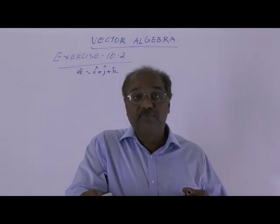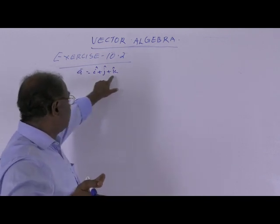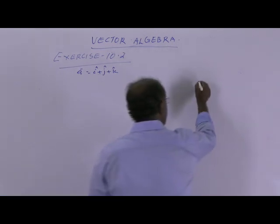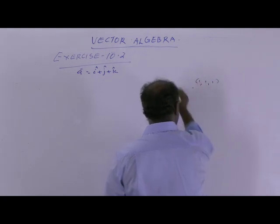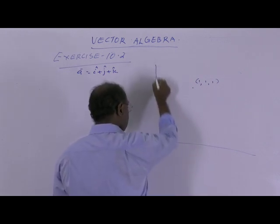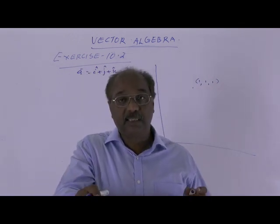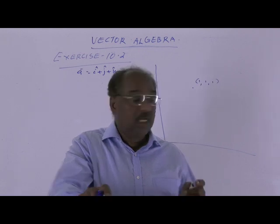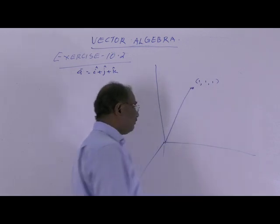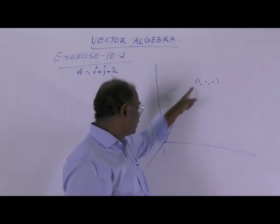Here a is i plus j plus k. That means this is the position vector of the point (1, 1, 1) in the coordinate plane. The position vector of the point x, y, z is xi plus yj plus zk. So this is the point (1, 1, 1), and this is the position vector of that point. The distance is the distance between this point and the origin.